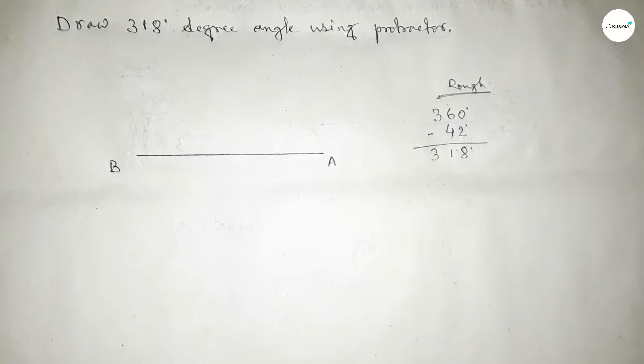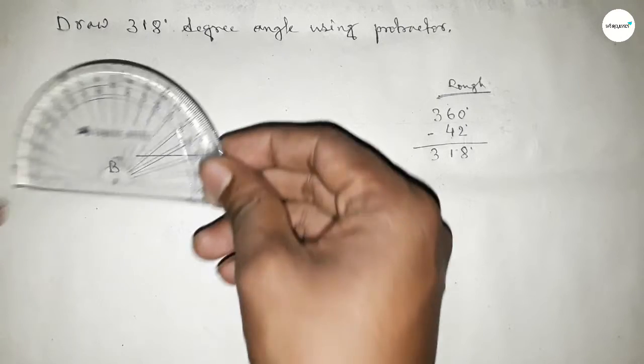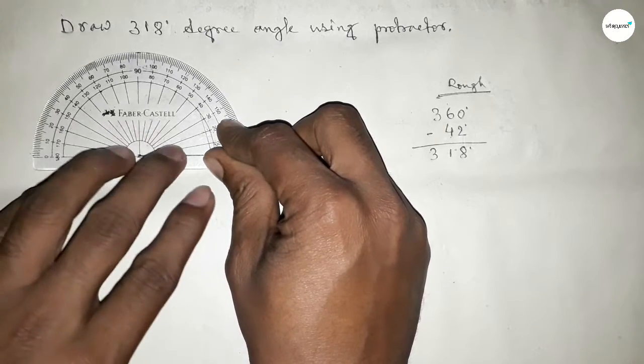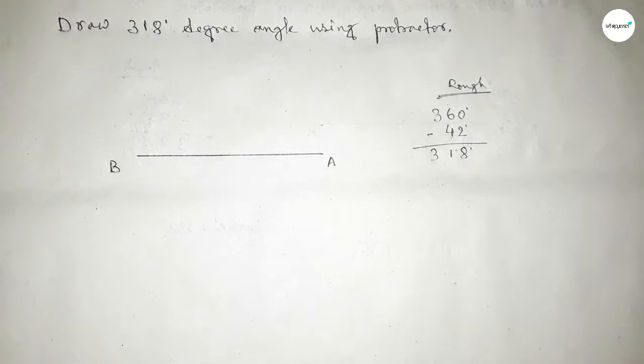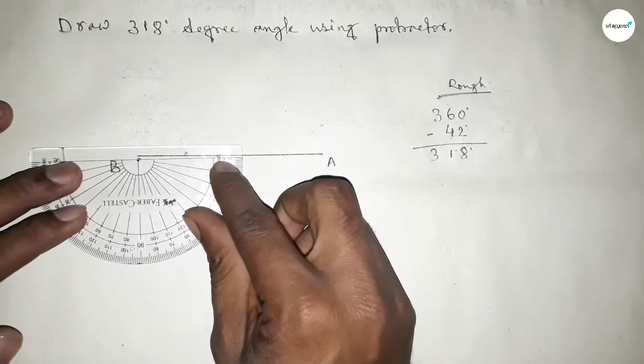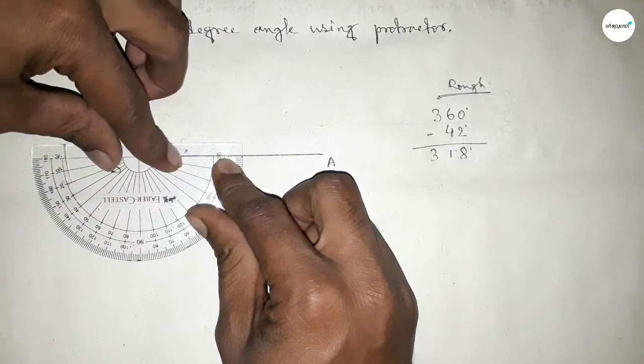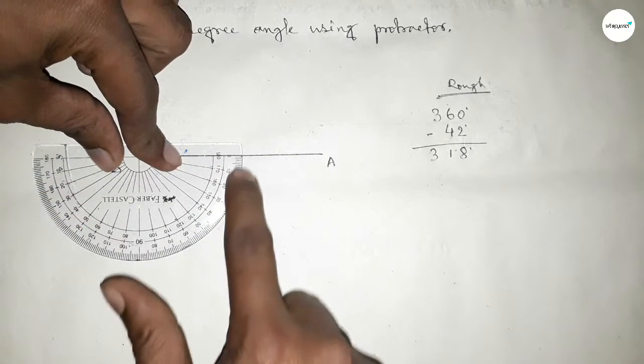First we have to draw 360 degree angle. So putting the protractor on the point B by this way, and from this total 180 degree angle, plus putting the protractor on the point B by this way and counting the angle, so this is up to 360 degree angle.